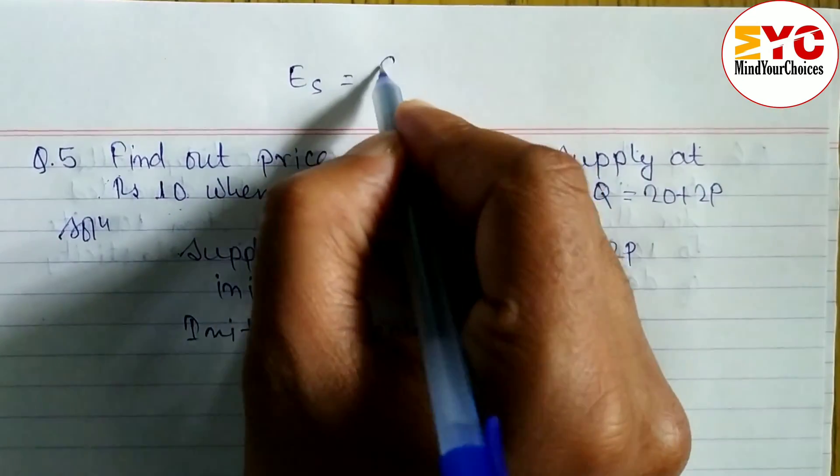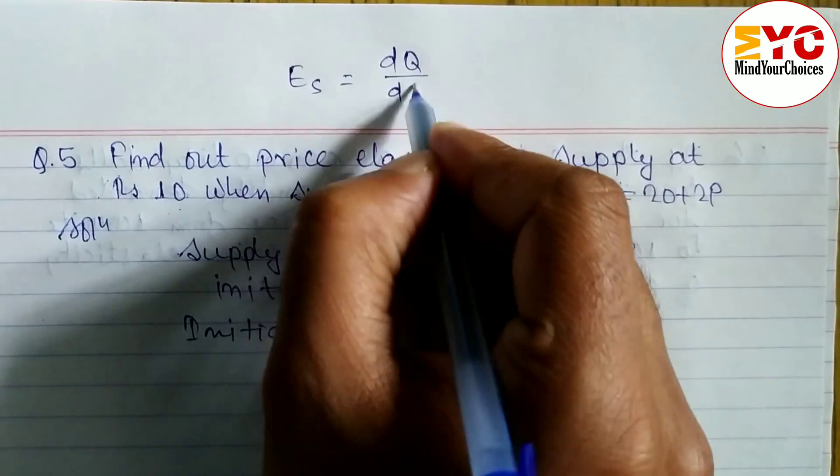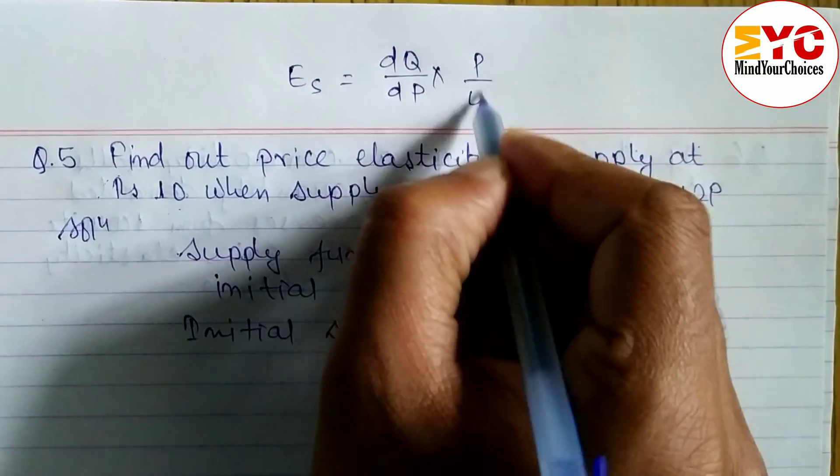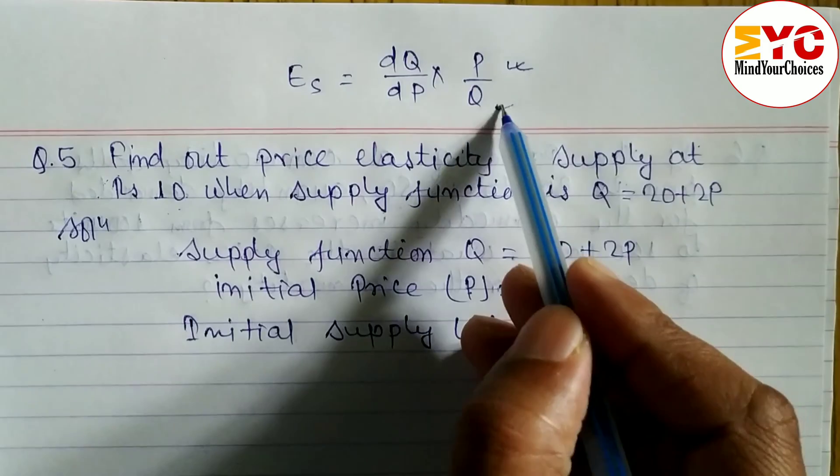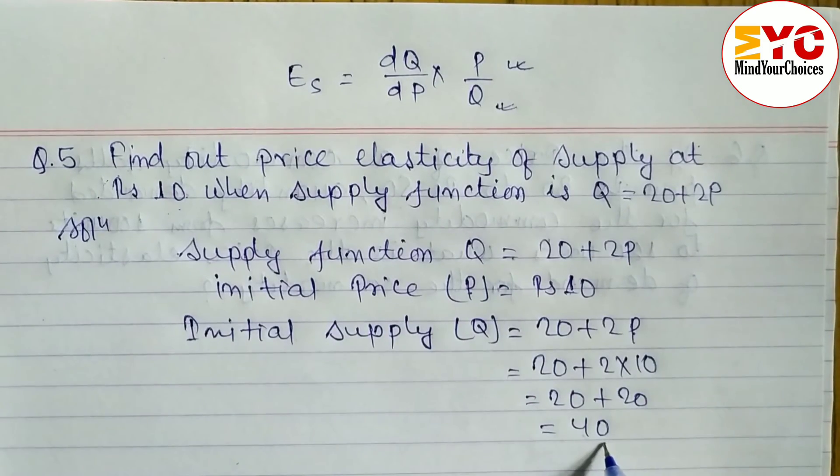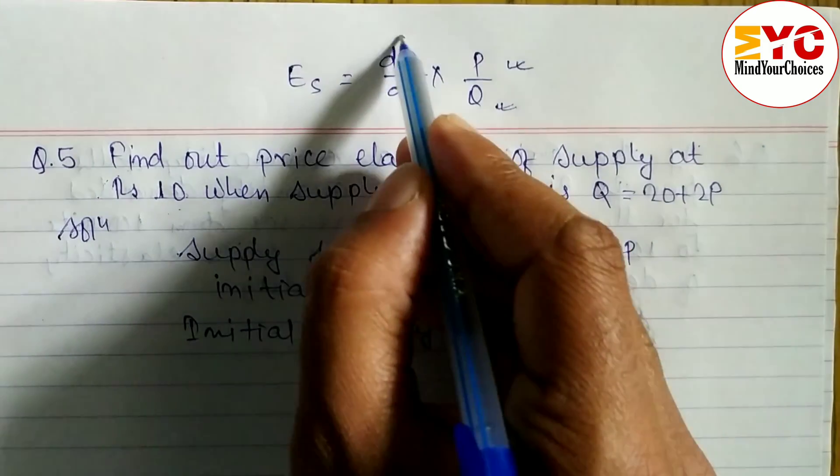What is the formula of elasticity of supply? Es = (dQ/dP) × (P/Q). We have the value of P which is Rs 10, we have the value of Q which is 40.